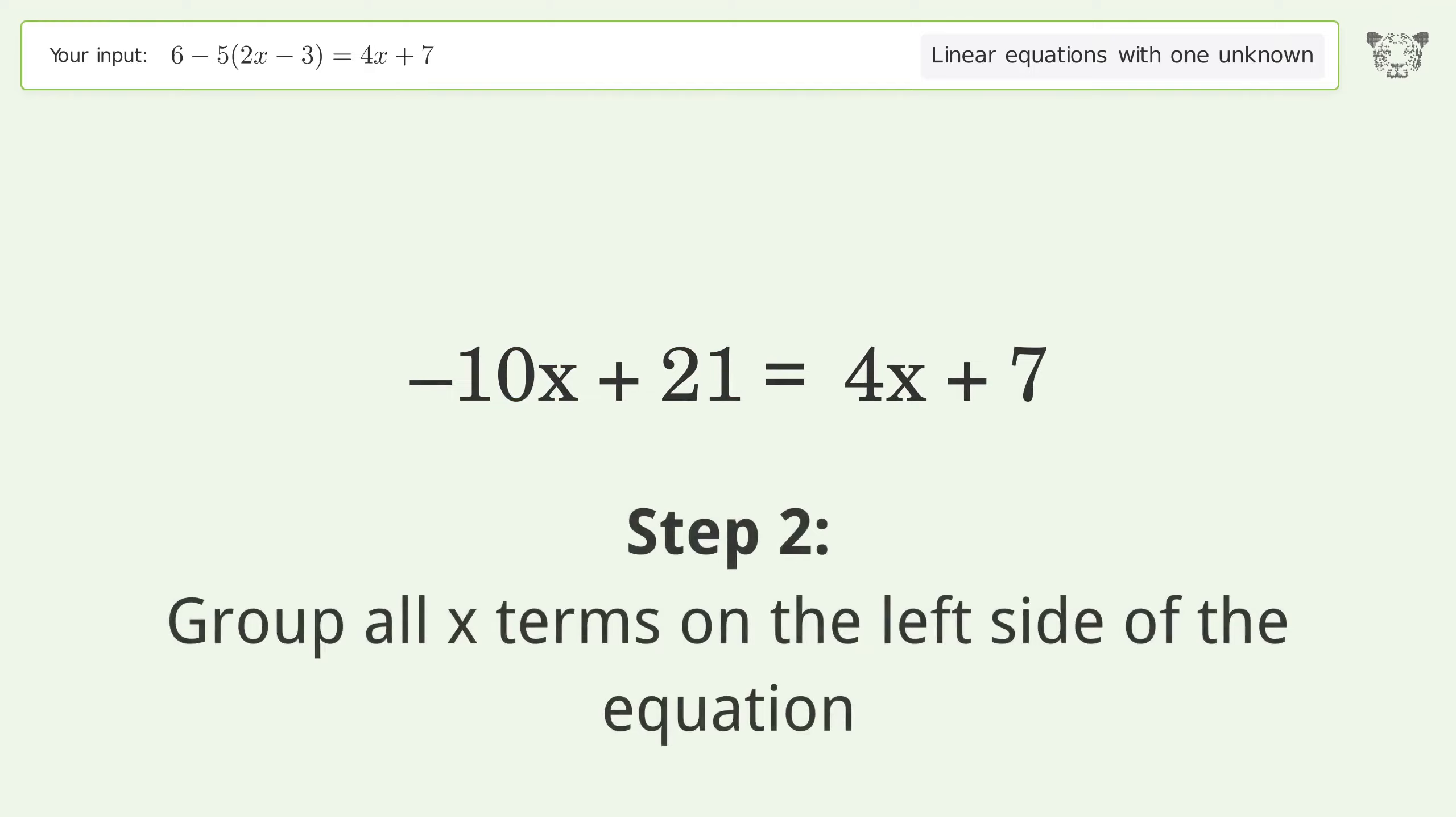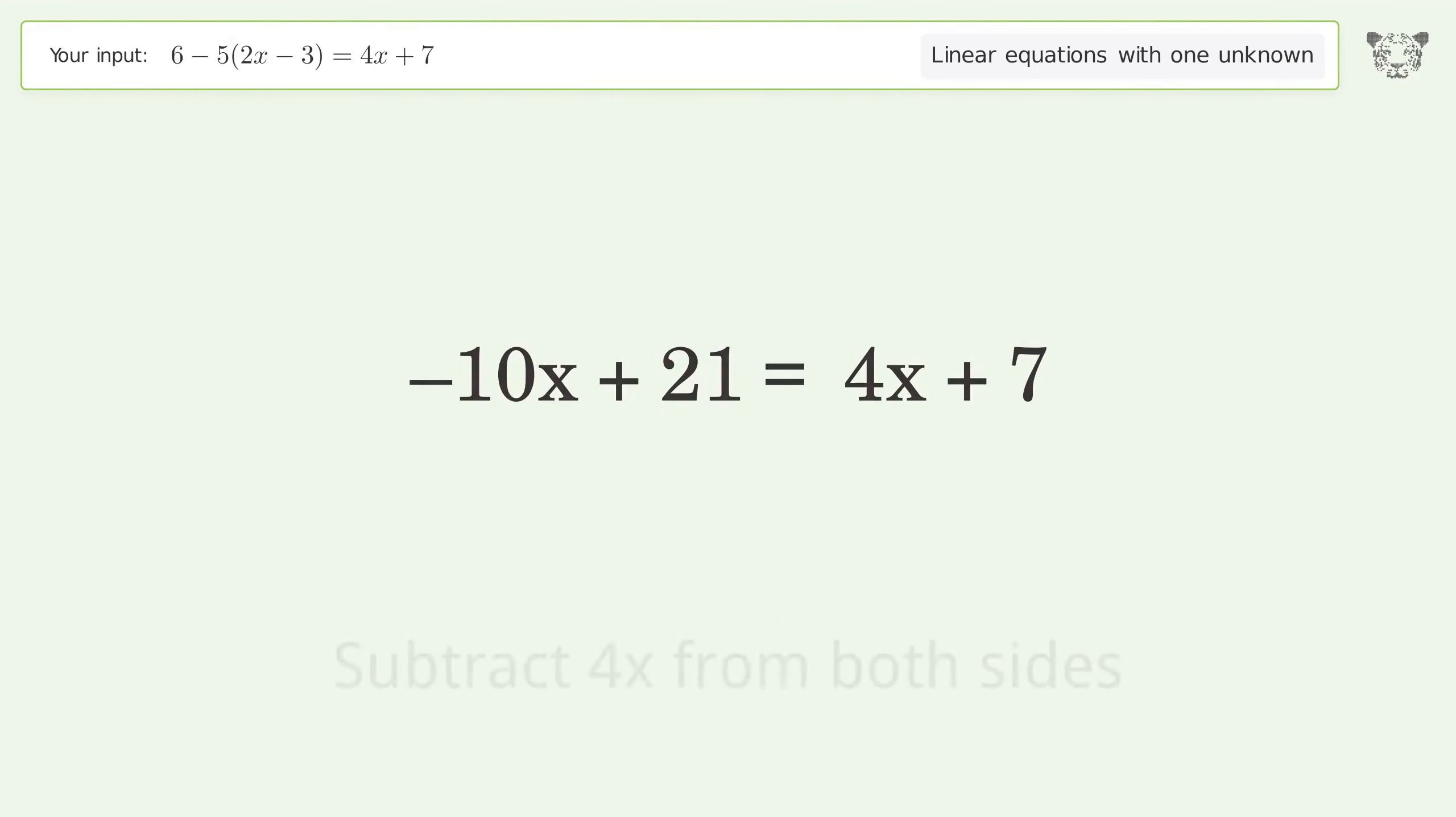Group all x terms on the left side of the equation. Subtract 4x from both sides. Group like terms. Simplify the arithmetic.